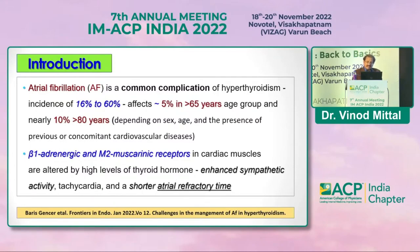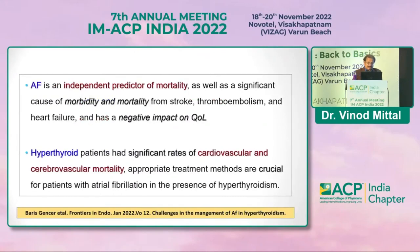In hyperthyroidism, T3 and T4 cause alteration in beta-1 adrenergic and M2 muscarinic receptors present in the cardiac muscles. Once there is disruption or alteration, it leads to enhanced sympathetic activity as well as a shortened atrial refractory time, resulting in more frequent and erratic beating of the atria — atrial fibrillation.